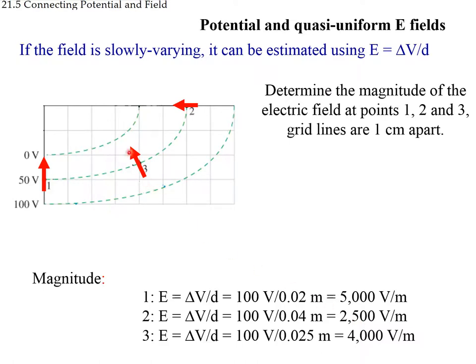Point 3 is more complicated because it is at an angle. We know 100 volts change from one equipotential to the next, but we need to estimate the perpendicular distance. Judging from the geometry, it is approximately 2.5 centimeters, so the ratio gives about 4,000 volts per meter.